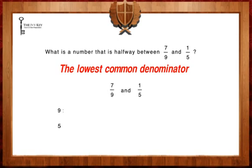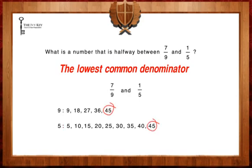The first few multiples of nine are 9, 18, 27, 36, and 45. The first few multiples of five are 5, 10, 15, 20, 25, 30, 35, 40, and 45. As we can see, we have a common multiple of 45 between nine and five.